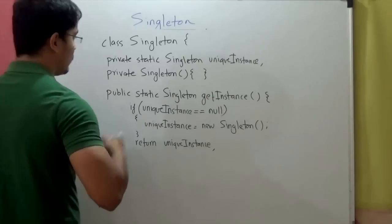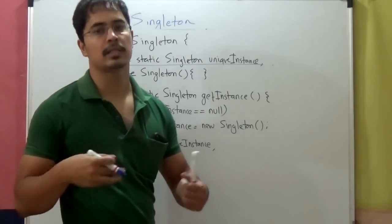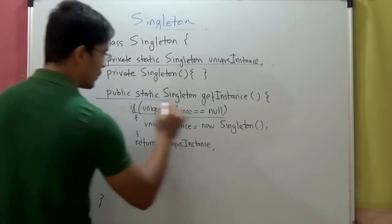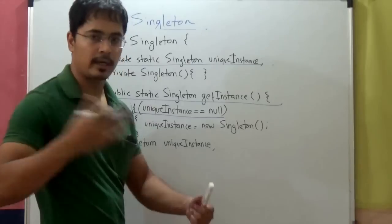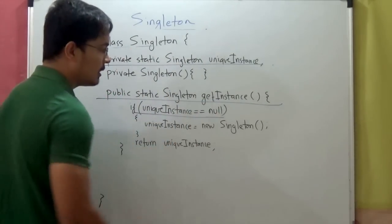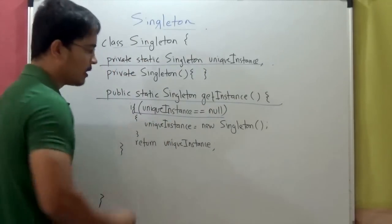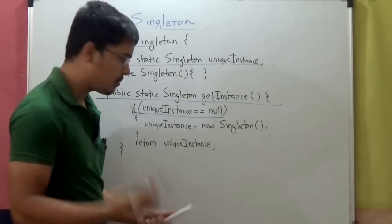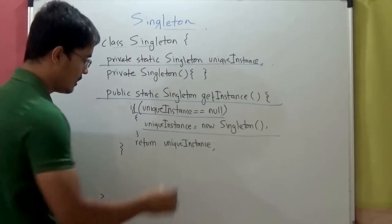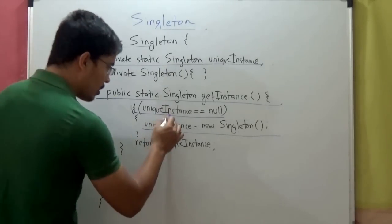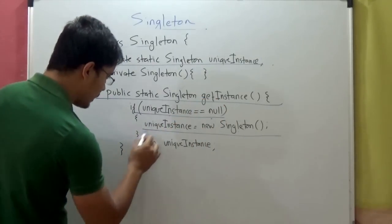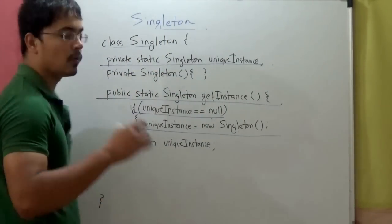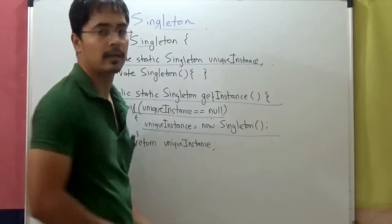This variable stores the unique instance. This is a static variable, and this is our global point of access — the way outside classes can get an instance of this singleton class is by calling the static getInstance method. In this method, we first check if uniqueInstance is null or not. If it has not been created before, we create a new singleton instance, assign it to uniqueInstance, and return it. If it is already created, we simply return the uniqueInstance. This way we ensure there exists one and only one instance at any point in time.